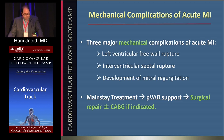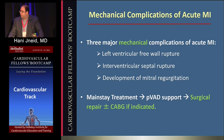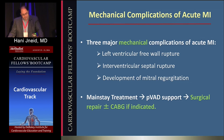The three major types of mechanical complications are LV free wall rupture, septal wall rupture, and the development of mitral regurgitation. The mainstay treatment is percutaneous circulatory assist device, followed by emergent surgical repair with or without CABG.